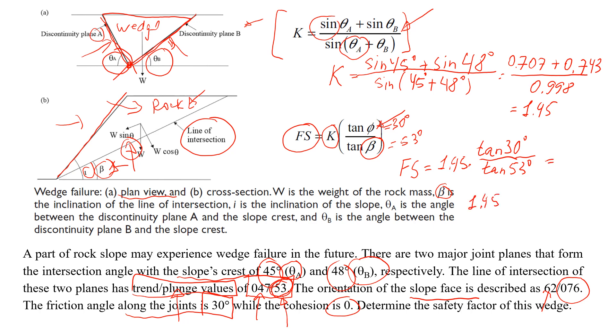So here we're going to get 1.45 times 0.577 divided by 1.327. Should give us a value of 0.63.